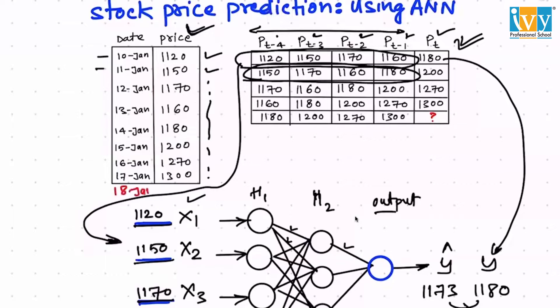Essentially, if I want to predict the stock price for January 18th, the most natural reaction would be: what was the price the previous day, the day before that, the day before that — or maybe you take the average of the last four or five values. You look at the past data to see how the stock has been doing. Even when you make investment decisions, basic fundamental analysis asks: is the stock below the 52-week average or above it?